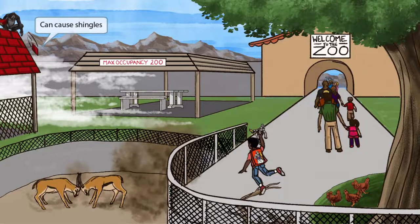Now let's turn our attention to the left side of the image where we can see a clever monkey that has escaped. He's taunting the visitors and throwing shingles at everyone. Maybe this is why the zoo closed early and the line of people are leaving. In any case, the monkey throwing shingles should help you remember that VZV can cause shingles.